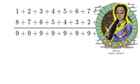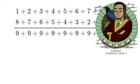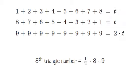That's an easy way to find triangle numbers. To summarize, we see that the eighth triangle number is equal to one-half times eight times nine. Or taking n to be eight, we have that the nth triangle number is equal to one-half times n times n plus one.